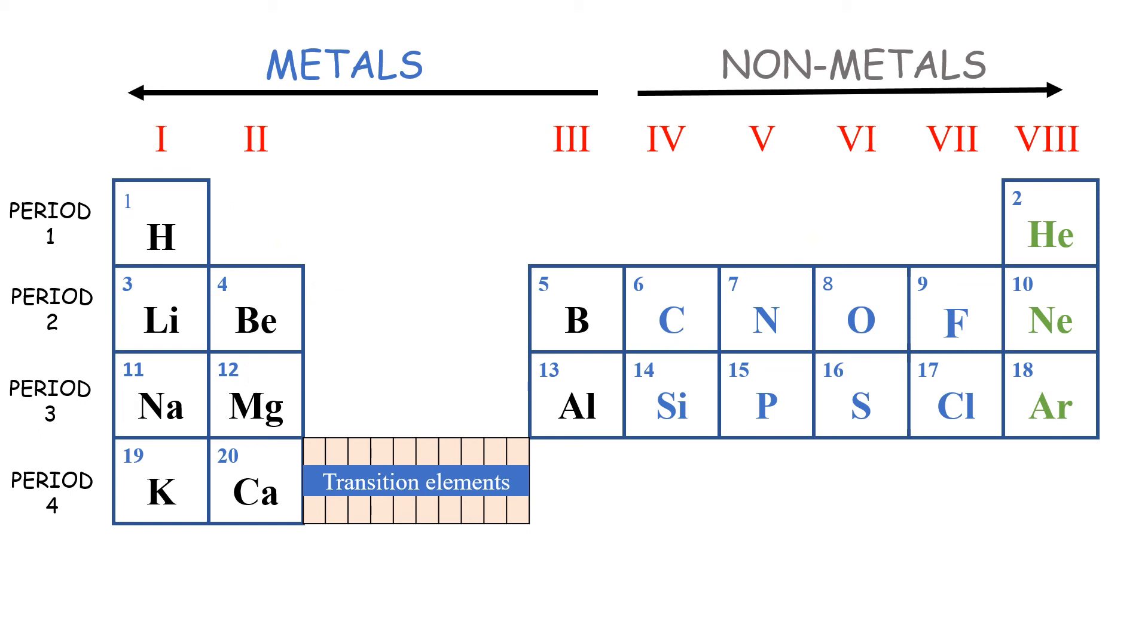However, when you go to periods, periods will instead tell us the number of energy levels an atom has. For example, hydrogen is in period 1, that means it will have only one energy level. While lithium, which is in period 2, will have two energy levels, the innermost and the outermost that contains the one electron. Period 4, for example, calcium will have four energy levels. So basically, periods will tell us how many energy levels a given atom has.